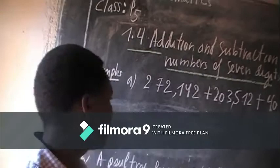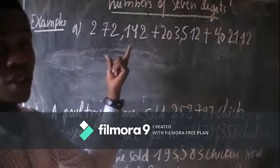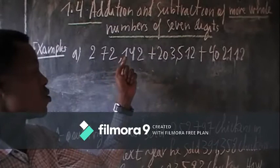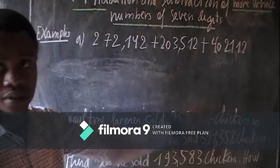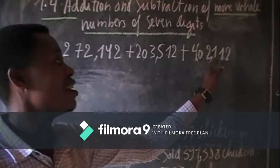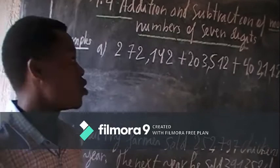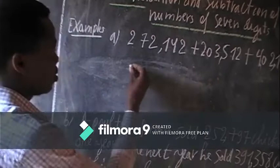So here you're having examples from A up to D. Let us do the first one. Here you're having 282,1842 plus 203,185 plus 402,185. So we're going to add those numbers by arranging them vertically.